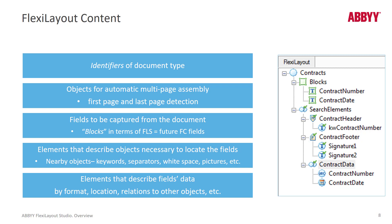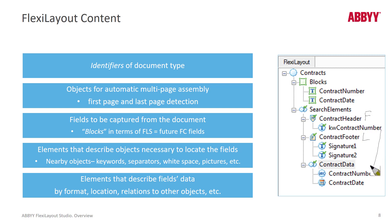Identifiers are elements used to identify a form. We have a header group used for finding the first page of a form, and a footer group used for identifying the last pages — this is rule-based identification. Once the form is identified, we set up fields such as contract date, finding data based on its format. We can also find data based on relationships — for example, finding the keyword 'contract number,' which is linked to a character string element. Relative to that keyword, we find the actual data. We then map the target fields — contract number and contract date — to blocks, which become future FlexiCapture fields.